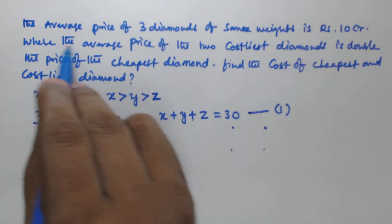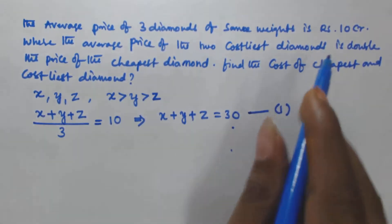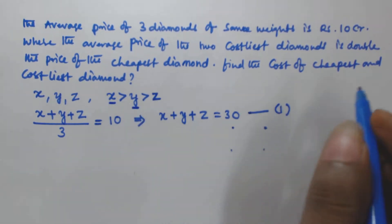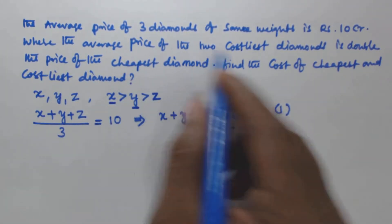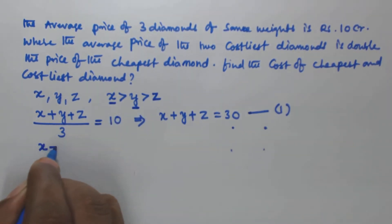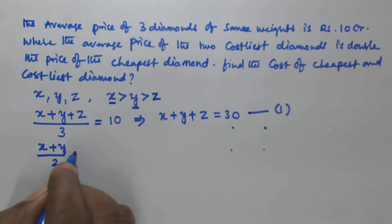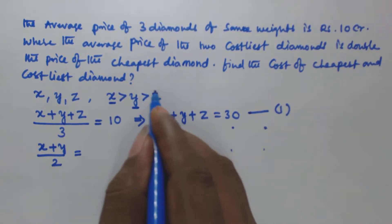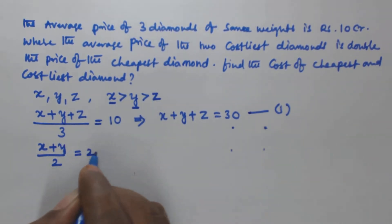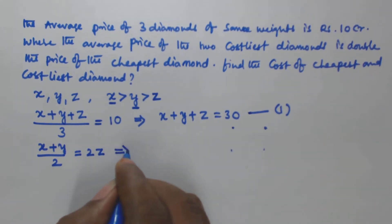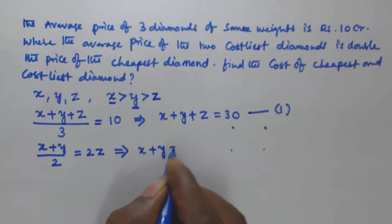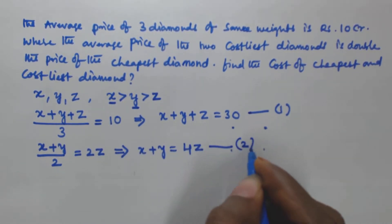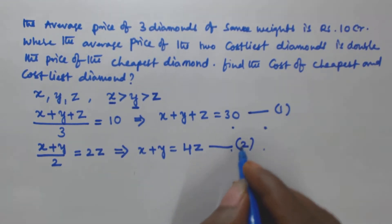It is given that the average price of the two costliest diamonds — x and y — is double the price of the cheapest diamond. So (x + y) / 2 = 2z. From this equation we get x + y = 4z. Let us call this Equation 2.